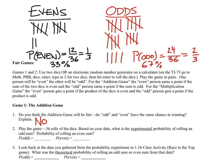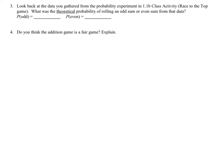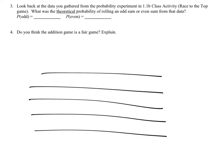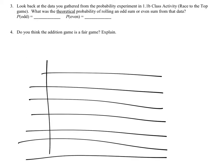Now let's find the theoretical probability of rolling an odd or even sum using an area model. We set up a table with one die's values — 1 through 6 — across the top and the other die's values — 1 through 6 — down the side, then fill in all the addition results.